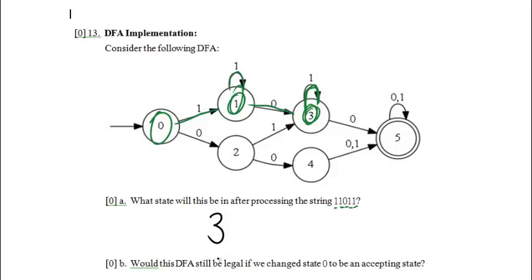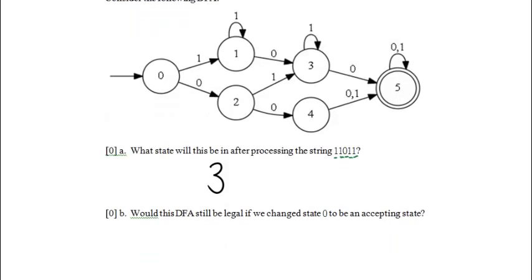Would this DFA still be legal if we change state 0 to be an accepting state? Well let's go ahead and sketch what that would look like. So I'll erase these notes that we made here and sketch in an extra circle here to make this an accepting state. And would that be legal? Sure, it would just accept the empty string now and before it rejected the empty string. So it wouldn't be the same DFA, but it would certainly be legal. So that's no problem. Yes, this would still be legal.